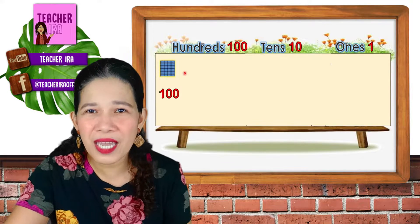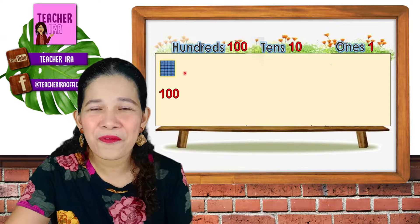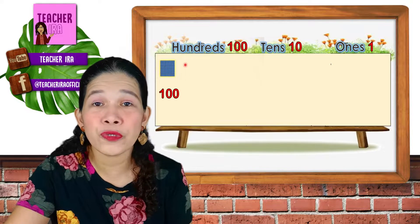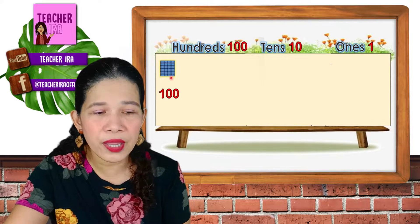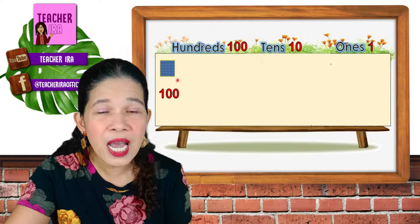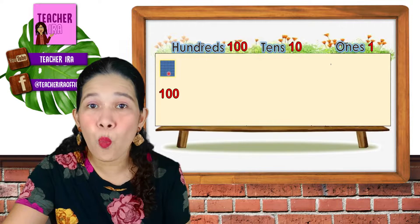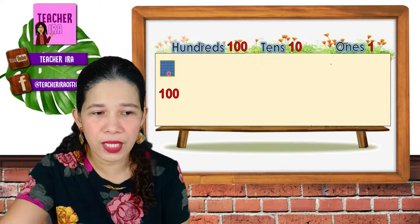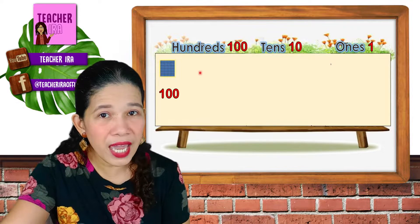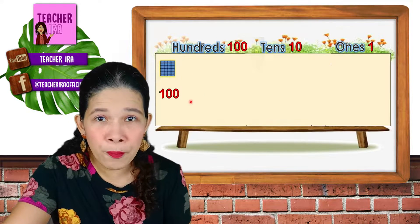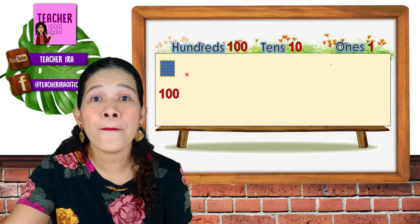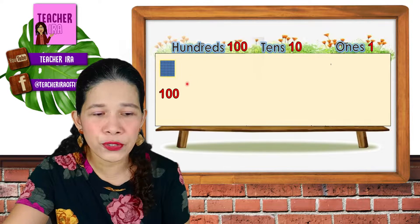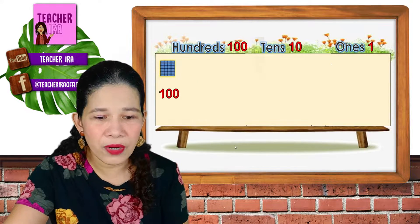How many? Very good — it represents 100. Not 1, not 10, but 100. So here, if the number is in the 100s place, we will be counting by hundreds. Now, let's take a look at some more examples.